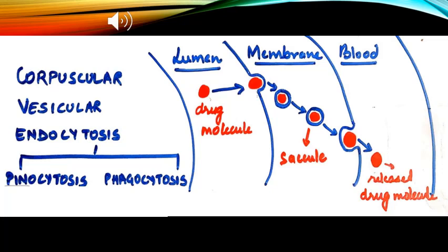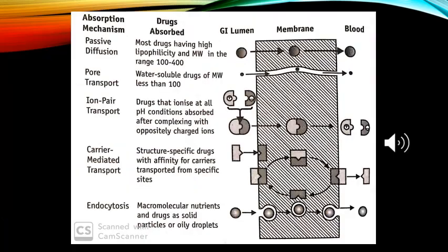This is all about the different types of absorption mechanisms of drugs. To conclude, this diagram explains different absorption mechanisms, what kinds of drugs are absorbed using these mechanisms, and a diagrammatic representation of how drug molecules are transported from the lumen to the blood via the membranes.